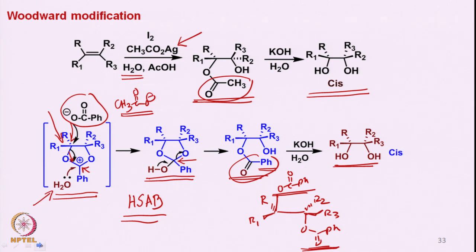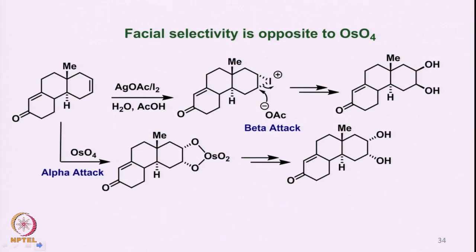So one gets a cis-diol. This is a very interesting modification introduced by R. B. Woodward. Now if one looks at a complicated example, which is an intermediate for a steroid-type synthesis...